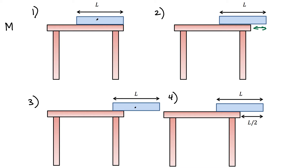The key to all these problems is to find the position of the center of mass. If there's only one block, that's easy — it's right at its geometrical center because the mass is uniformly distributed. We can represent the entire weight as acting down at the center of mass. As long as that center of mass is just slightly to the left of the corner of the table, the system will be stable. So for a single block, the maximum overhang is simply half the length, L over 2.